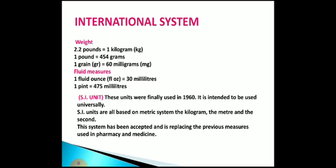In the international system, weight in pounds: 1 pound is equal to 1 kg approximately; more precisely, 1 pound is equal to 450 grams. 1 grain is equal to 60 mg. When measuring fluid volume, 1 fluid ounce is equal to 30 ml, whereas 1 pint is equal to 475 ml.